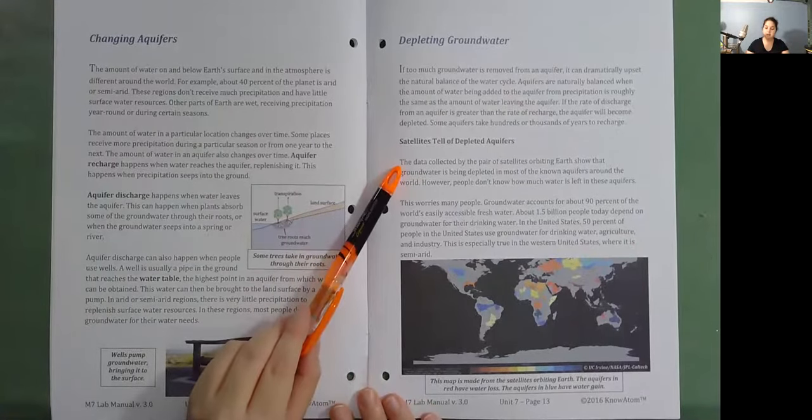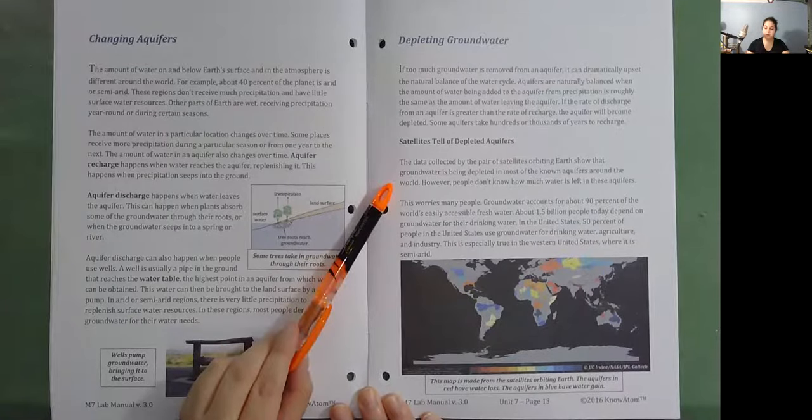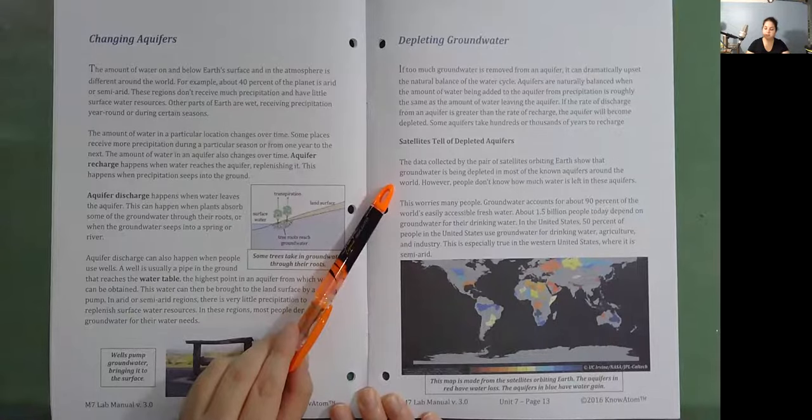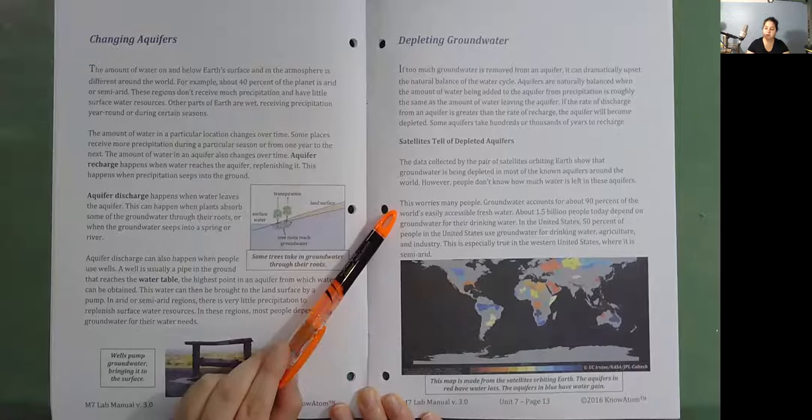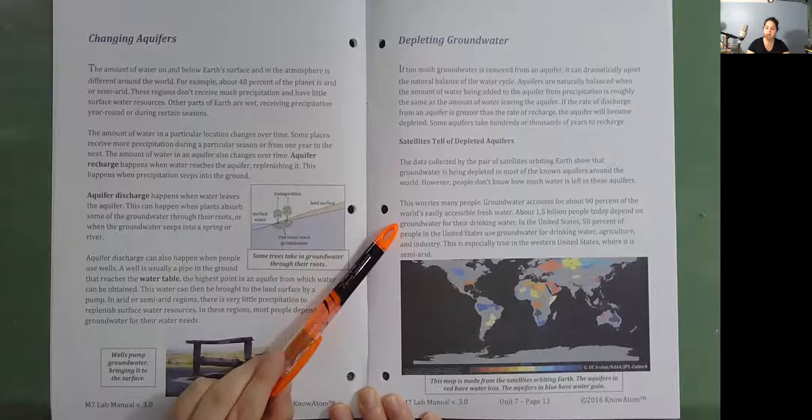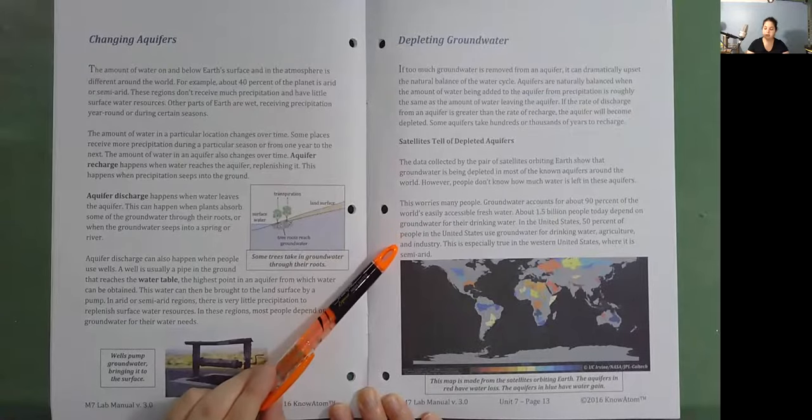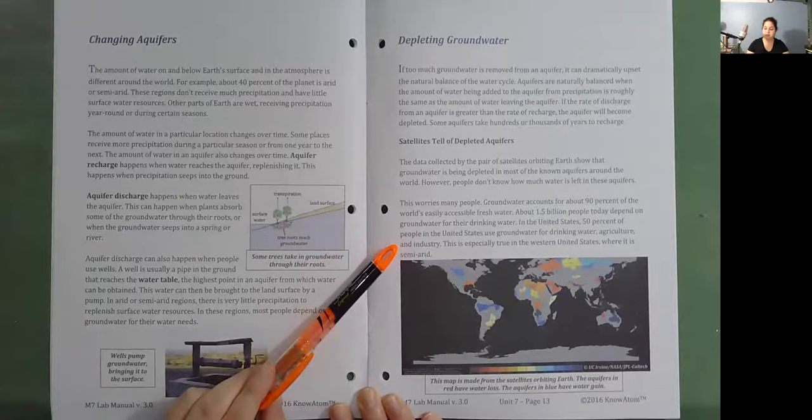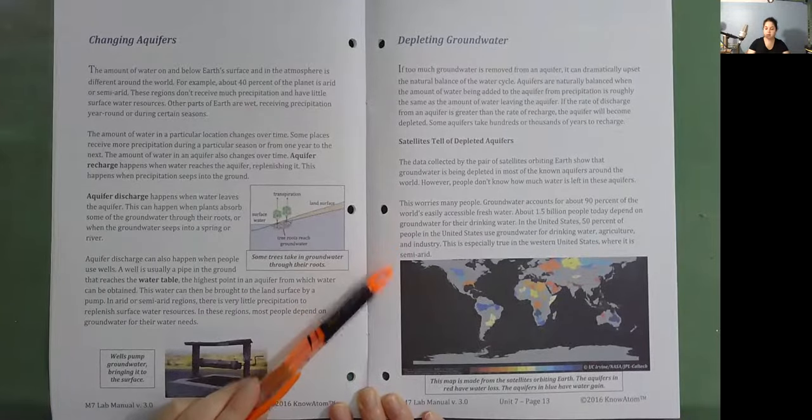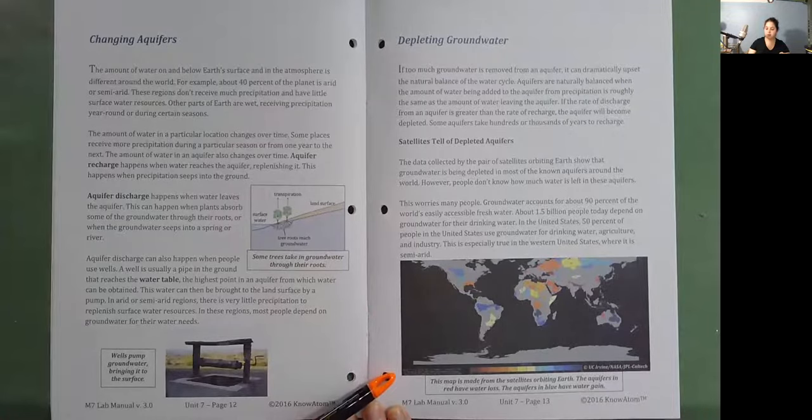Satellites tell of depleted aquifers. The data collected by the pair of satellites orbiting Earth show that groundwater is being depleted in most of the known aquifers around the world. However, people don't know how much water is left in these aquifers. This worries many people. Groundwater accounts for about 90% of the world's easily accessible fresh water. About 1.5 billion people today depend on groundwater for their drinking water. In the United States, 50% of people use groundwater for drinking water, agriculture, and industry. This is especially true in the western United States where it is semi-arid. This map is made from the satellites orbiting Earth. The aquifers in red have water loss. The aquifers in blue have water gain.